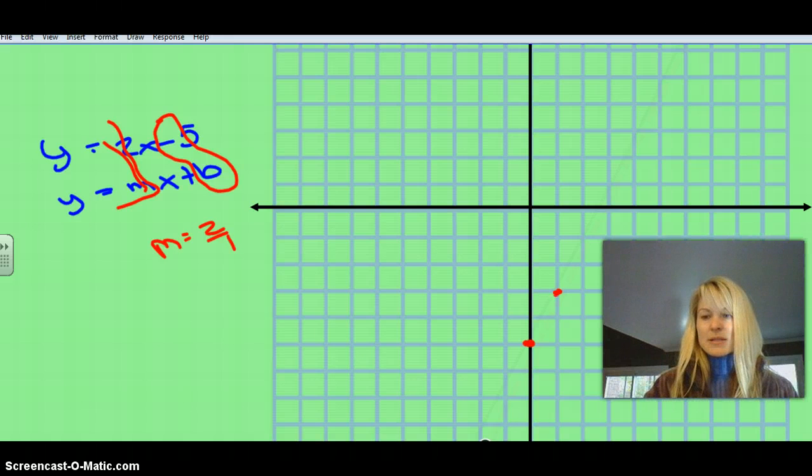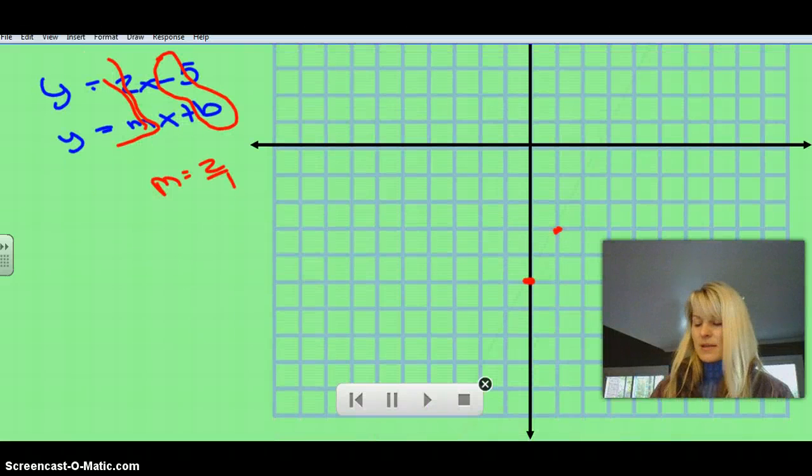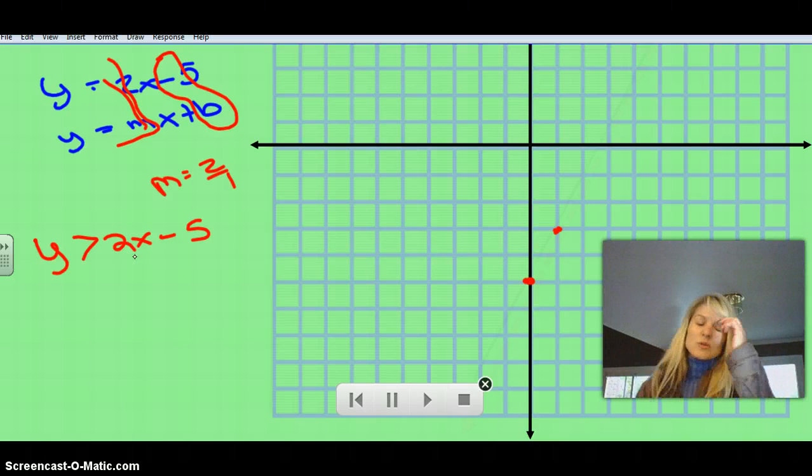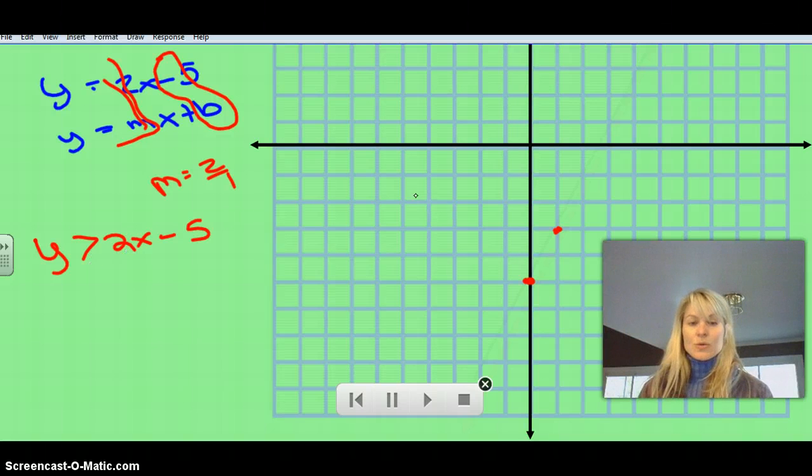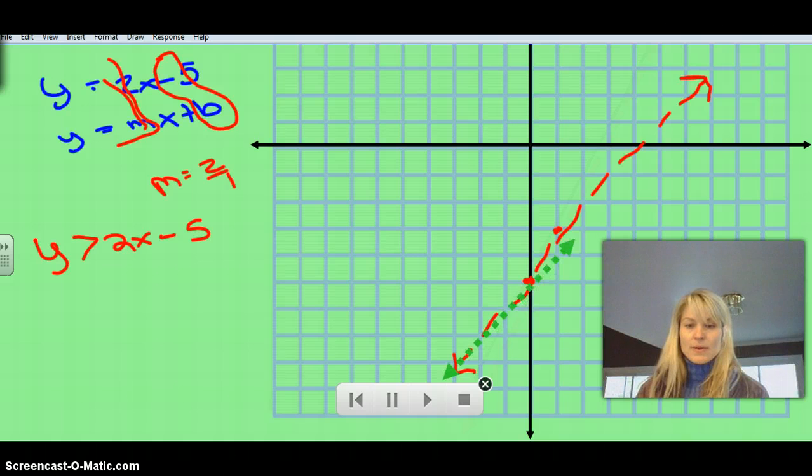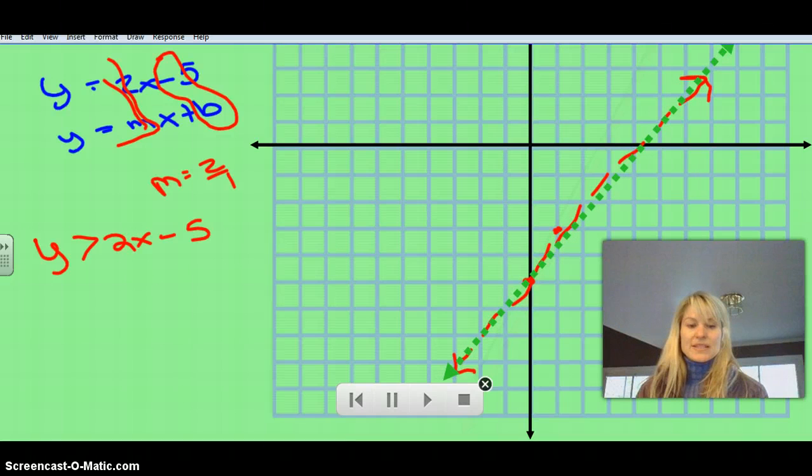Now, this one is a little bit different because if we look at this, it's y is greater than 2x minus 5. So there was no equals to. So that means the points on the line are not included. So when we draw this line, when you draw a greater than sign or less than sign that's not equals to, when we draw the line, we draw it dashed. Because that means the points on this line do not make the equation true. I think I have a dashed line. There we go. I should have done that. So dash. So that means it's not including.